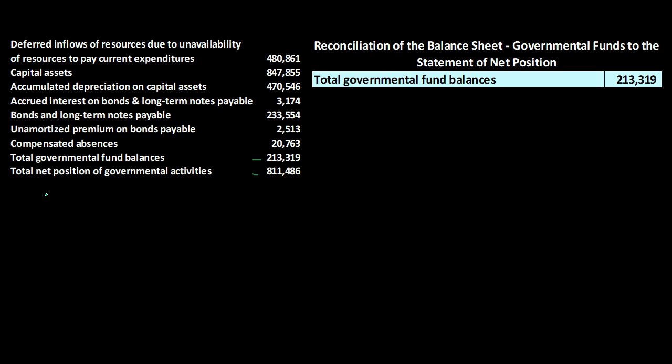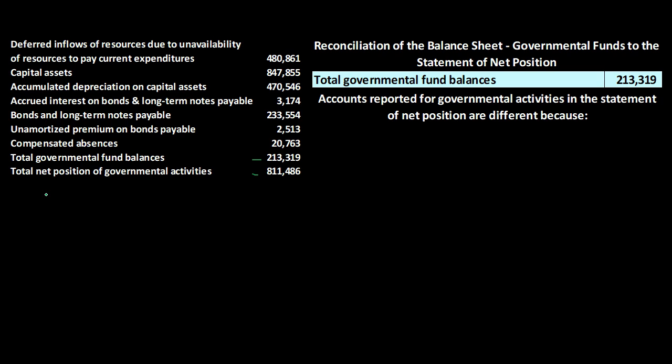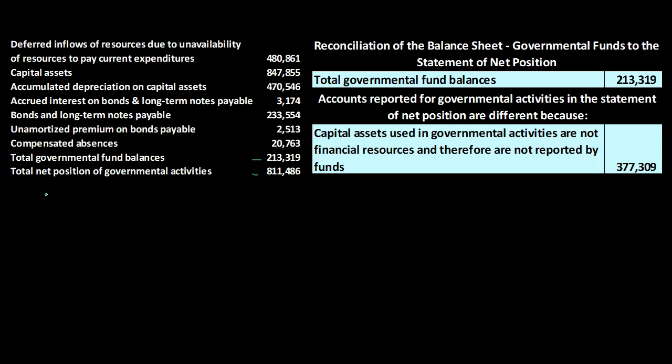We're going to list these out as: 'Accounts reported for governmental activities in the statement of net position are different because...' The first item: capital assets used in governmental activities are not financial resources and therefore are not reported by the funds. We pick up this amount — capital assets minus accumulated depreciation.